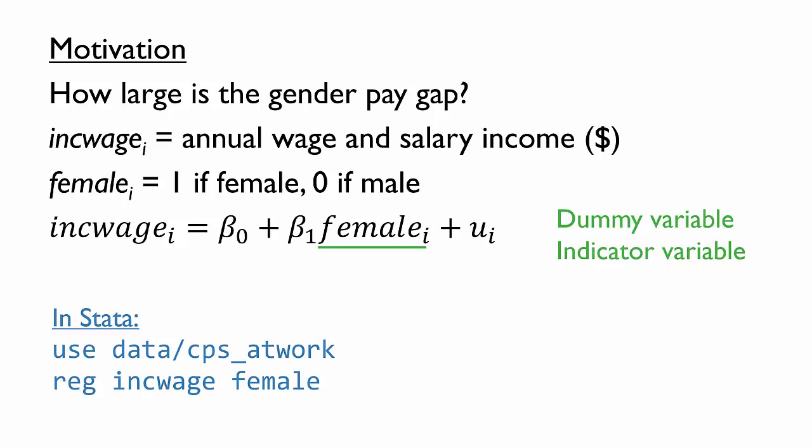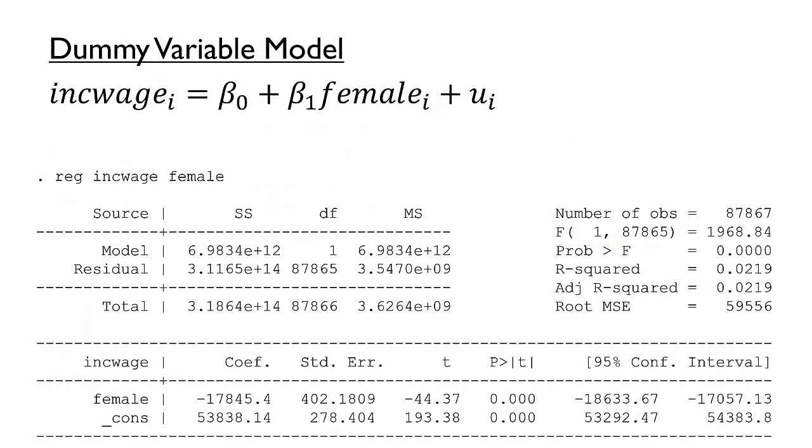The current population survey, or CPS, has the information needed to construct these variables, so let's estimate this model on a sample of CPS respondents who are employed. Here are the results of estimating our model. We can see the estimate of the female coefficient, or beta 1, and the intercept, or beta 0.